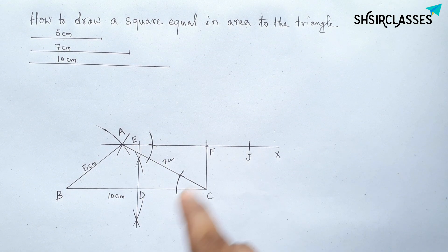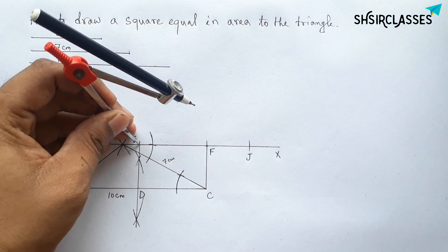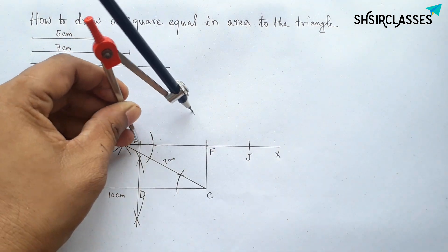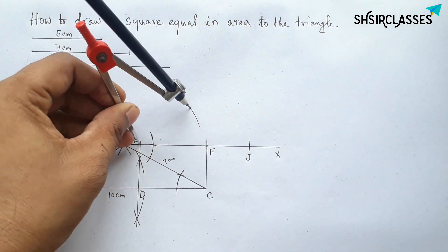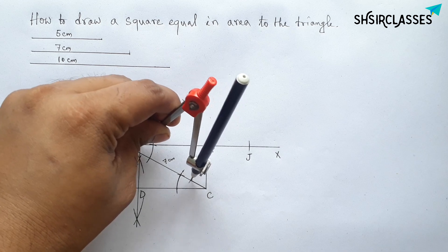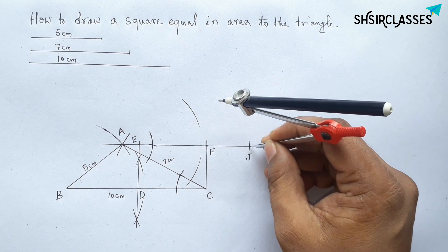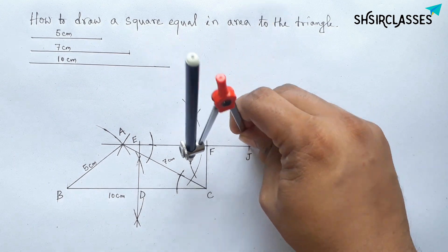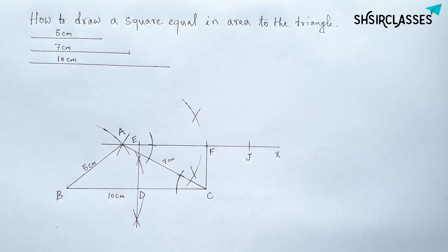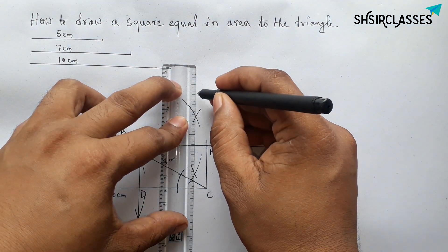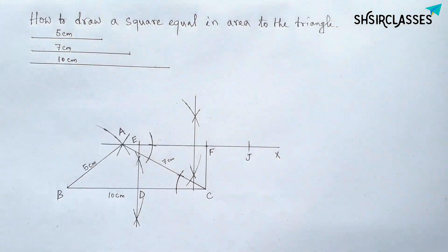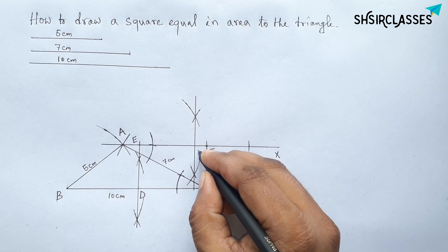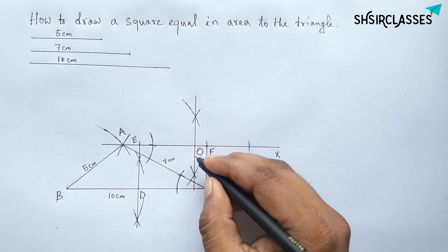Now bisect line EJ by taking a length greater than half of EJ and drawing arcs from both E and J with the same compass length. The arcs intersect to bisect line EJ, marking the midpoint as point O.